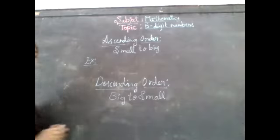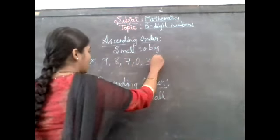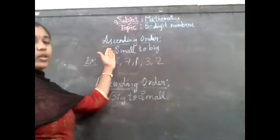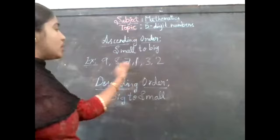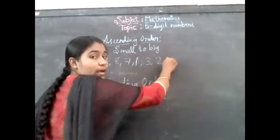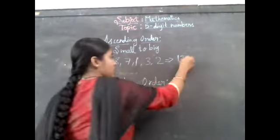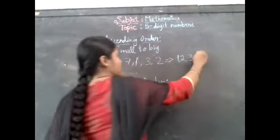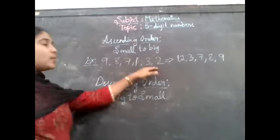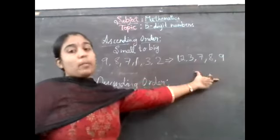Let us write a few examples on ascending and descending. Let me give you single digit numbers. For example: 9, 8, 7, 1, 3, 2. In ascending order, we know it is small to big. So which is the smallest number? 1 is the smallest. Then 2, next 3, then 7, 8, and 9. So these 6 numbers we have arranged in ascending order, that is small to big.